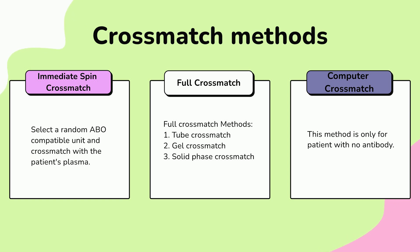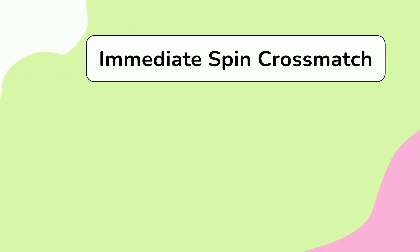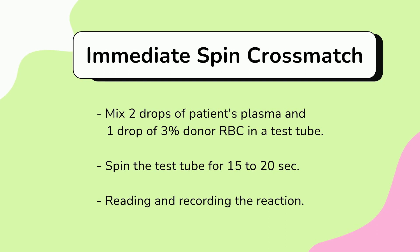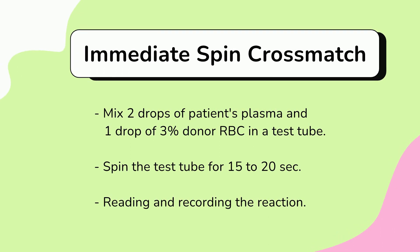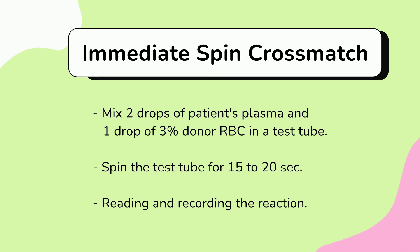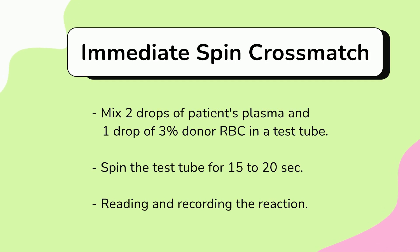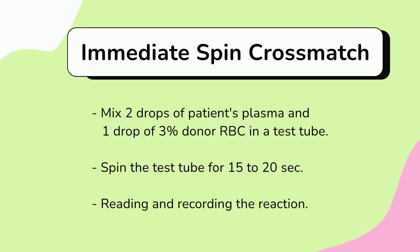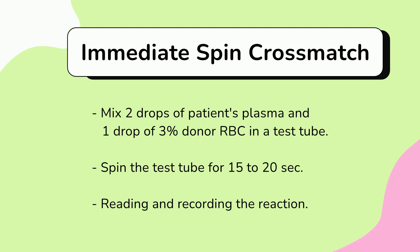Immediate spin crossmatch is traditionally the fastest and easiest crossmatch. You will mix the donor red blood cells and the patient plasma, spin, and read the reactions. The crossmatch is only checking ABO compatibility. Immediate spin crossmatch can be used for patients without antibodies or history of antibodies. We also use immediate spin crossmatch together with full crossmatch for patients with antibodies.